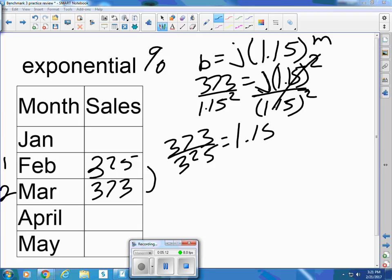And so j is equal to 373 divided by 1.15 squared. And that says, my calculator says 282. So j equals 282.